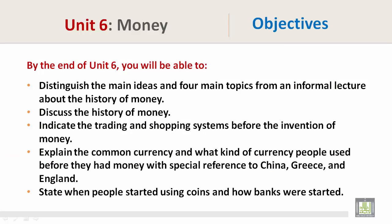By the end of Unit 6, you will be able to distinguish the main ideas and four main topics from an informal lecture about the history of money. You will also discuss the history of money, and indicate the trading and shopping systems before the invention of money. Additionally, you will explain the common currency and what kind of currency people used before they had money, with special reference to China, Greece, and England.